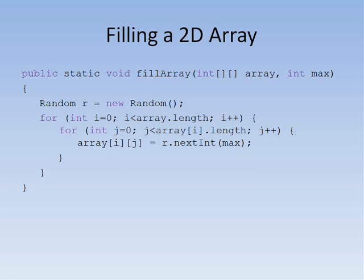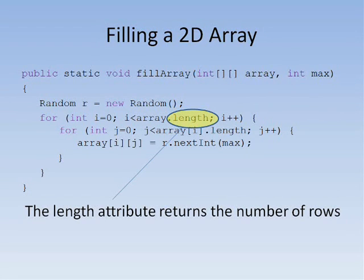The method fill array shows two nested for loops that fill a two-dimensional array of integers with random numbers from zero to max minus one. The outer loop counts from zero to array dot length minus one. Length is the number of rows in this two-dimensional array.